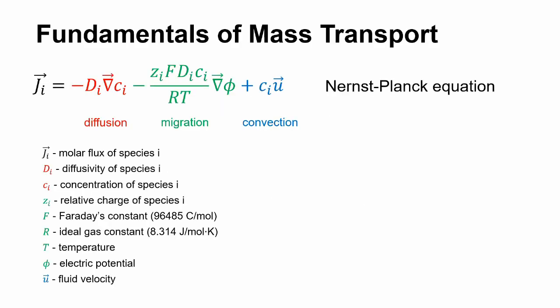First of all, let us consider mass transport in electrochemical systems in general, which is described in full by the Nernst-Planck equation. The first term corresponds to diffusion, a net movement of molecules from a volume of high concentration to a volume of low concentration through locally random motion, driven by a concentration gradient.